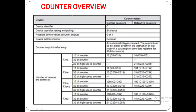In PLC FX1S series, 16-bit counters are 16 from C0 to C15, and 16 are retentive counters which are C16 to C31. 32-bit normal counters are not available in this series. However, 32-bit high-speed counters are available only in retentive type — these are 21, ranging from C235 to C255.